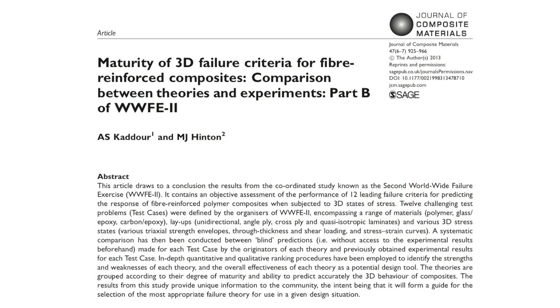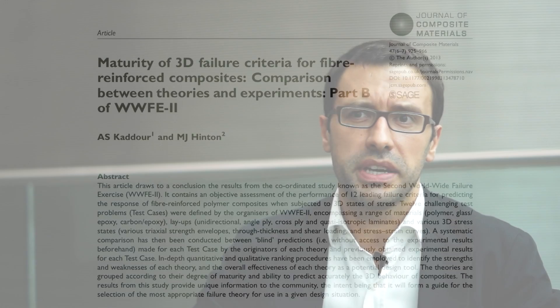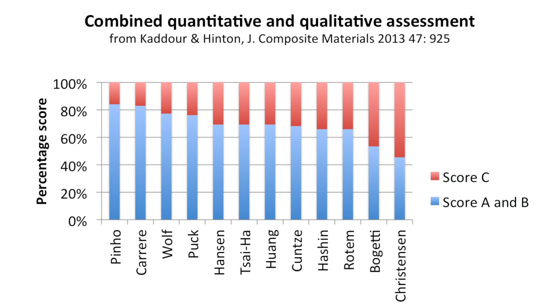For this reason, the scientific community organized benchmark failure exercises whereby selected researchers were asked to provide blind predictions for a comprehensive range of failure scenarios for which experimental results exist. The fact that the predictions are blind and that the range of scenarios analyzed is broad are key to providing a meaningful validation against experimental results and comparison between theories. We used our failure models in the second worldwide failure exercise, which focused on generic three-dimensional loading cases, and they were ranked first in both the quantitative and the qualitative rankings.